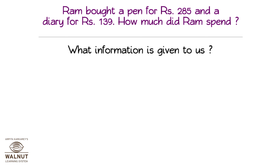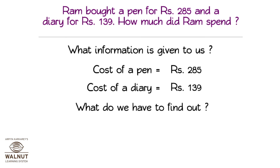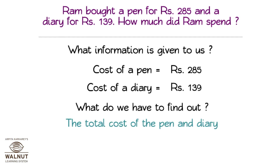What information is given to us? The cost of a pen is rupees 285, and the cost of a diary is rupees 139. What do we have to find out? The total cost of the pen and diary.